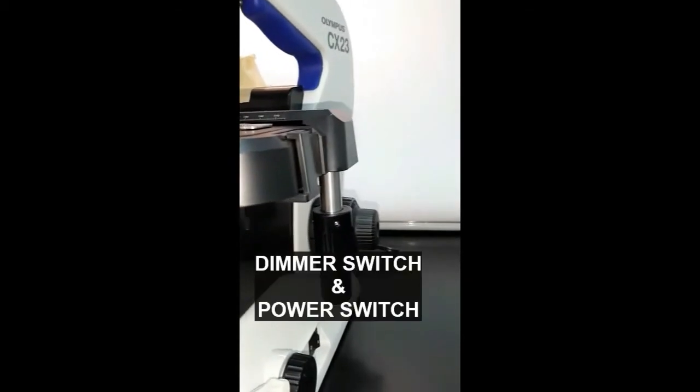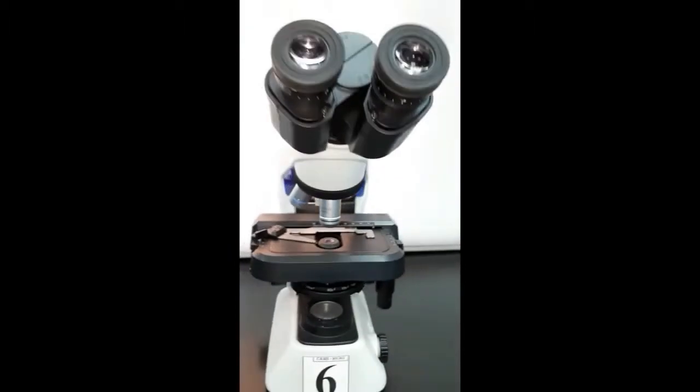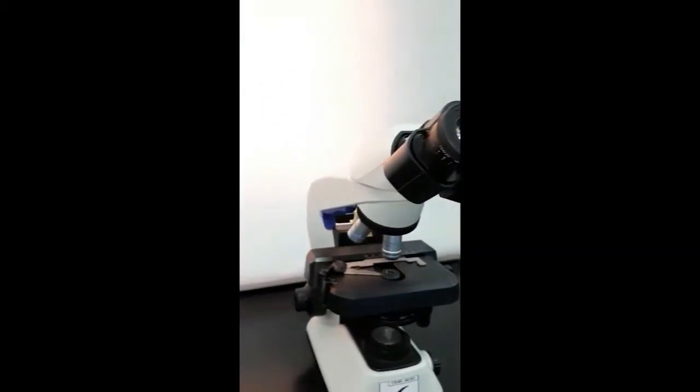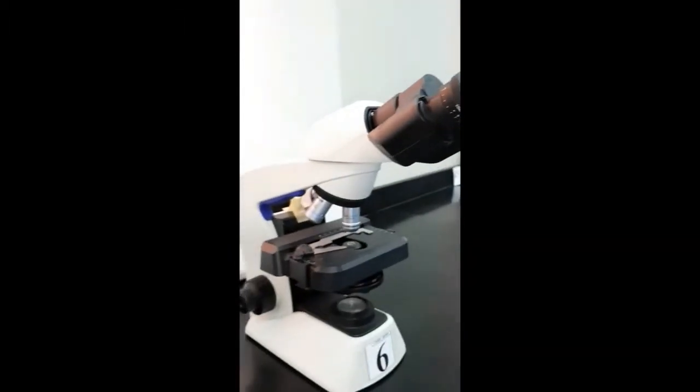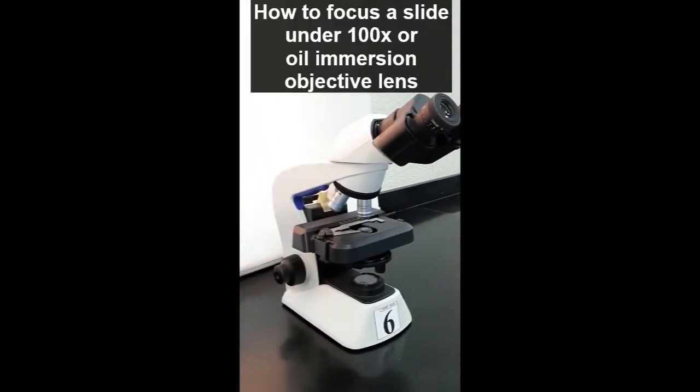The next part is the illuminator or the light source. On the right side, you can see the brightness adjustment knob and the light switch. I hope you understand the parts of the microscope.